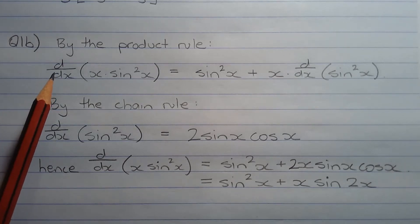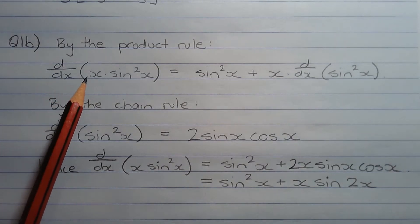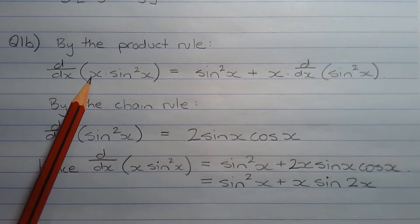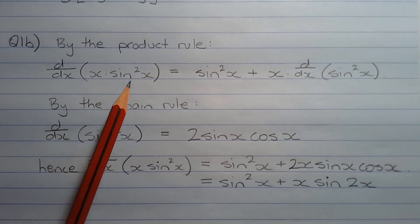The question is asking for the first derivative with respect to x of a product of two functions in x. So the first step is to apply the product rule. The product rule is y dash equals u dash v plus u v dash, where u represents x and v represents sine squared x.